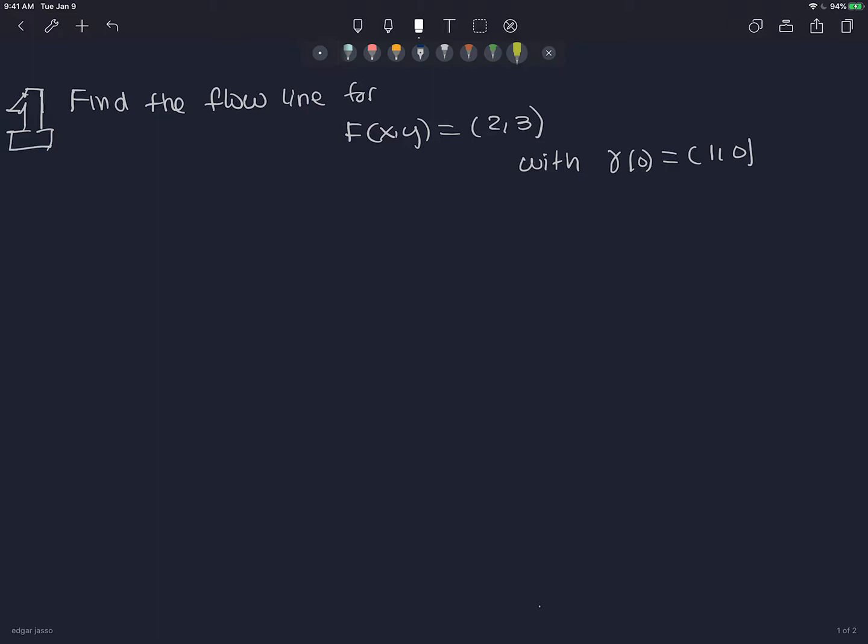So in this video, we're going to find a flow line for a vector field in two dimensions. A flow line is something called an integral curve. So let's start with that.